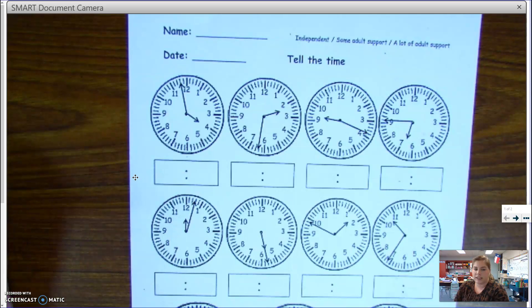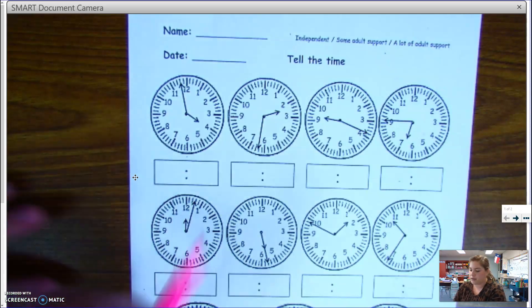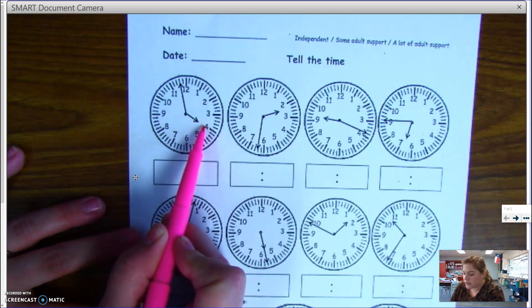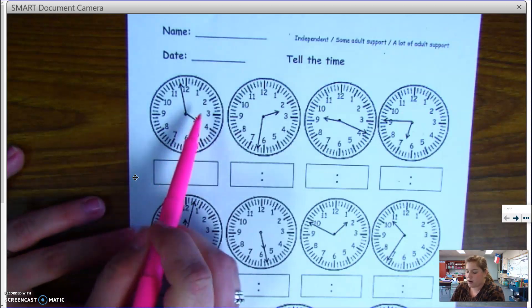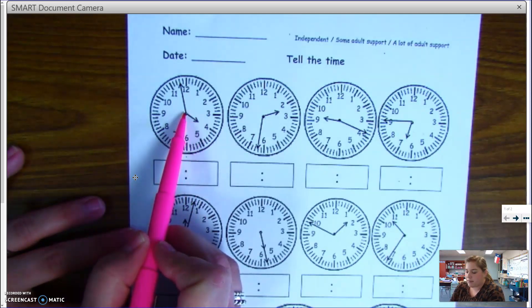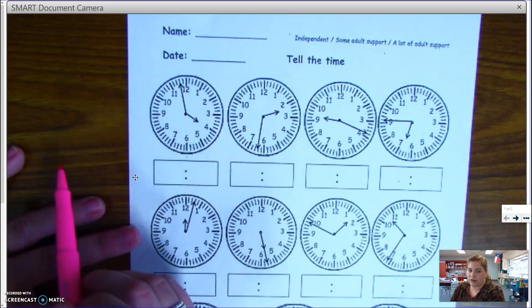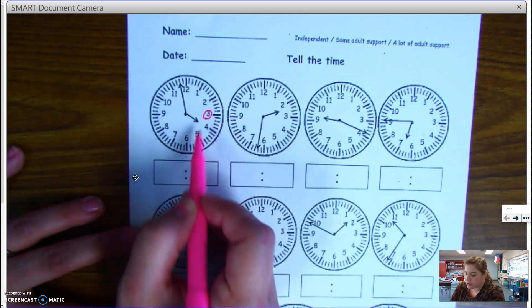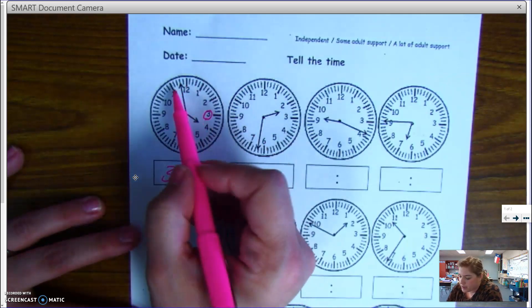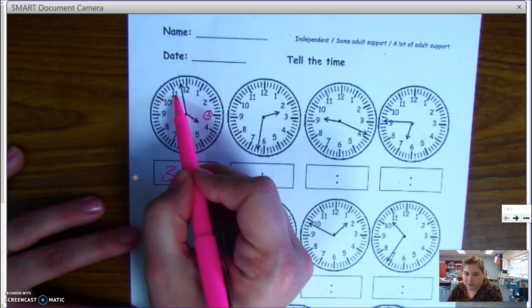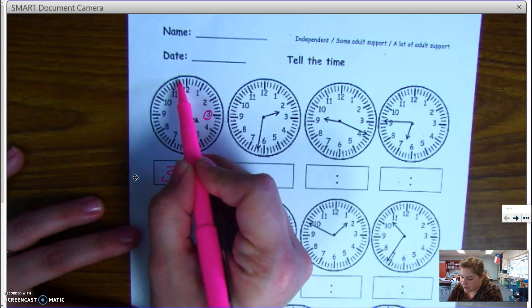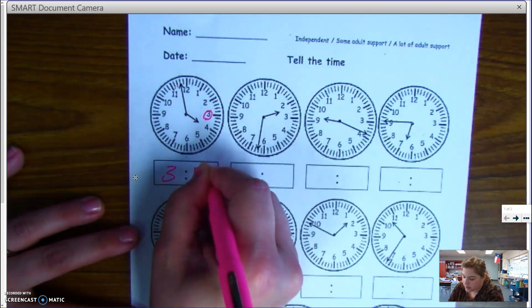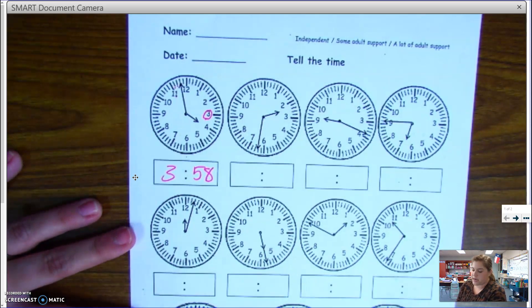We always find the hour first. And I notice that my hour hand looks like it's pointing at four. But my minute hand hasn't crossed twelve yet. So I know that the hour is still three. And the minute hand, eleven is at fifty-five. So this would be fifty-six, fifty-seven, fifty-eight. It is three fifty-eight.